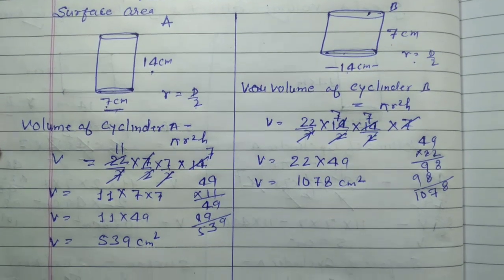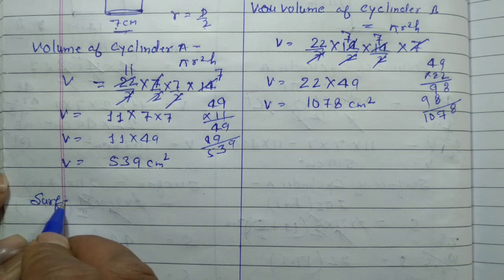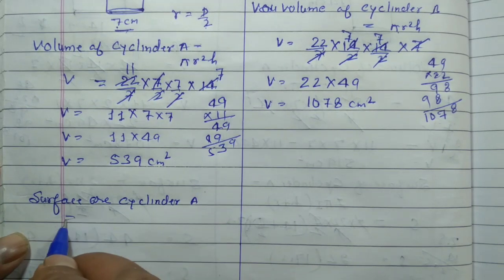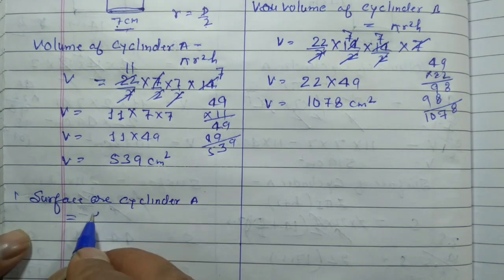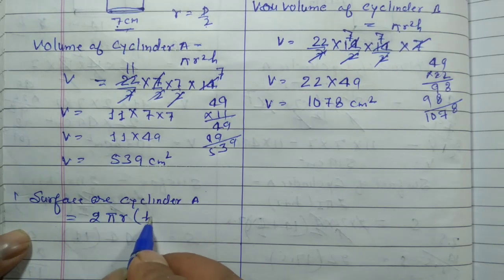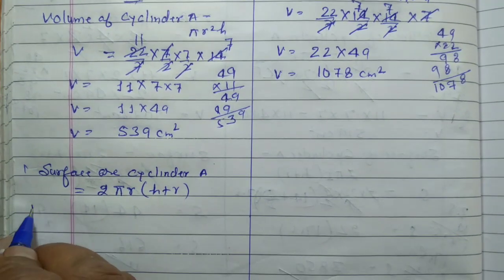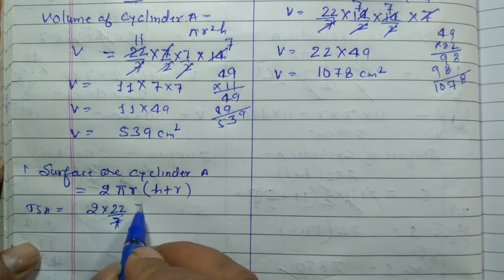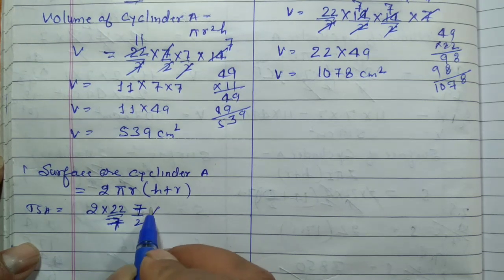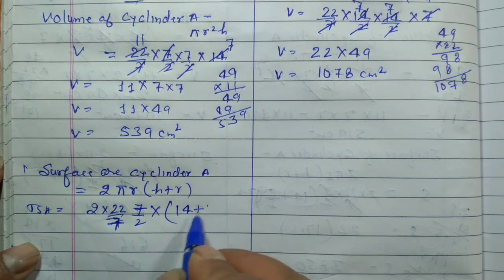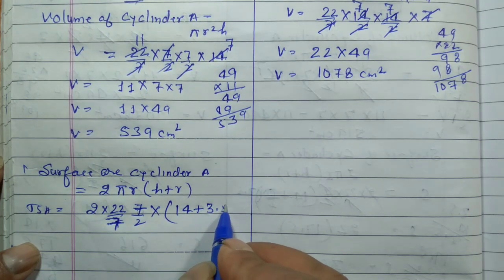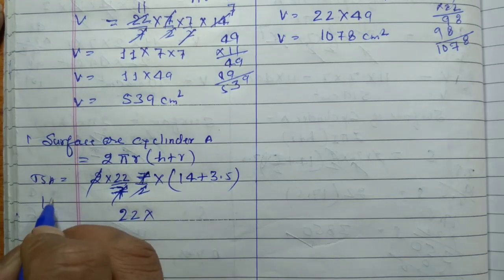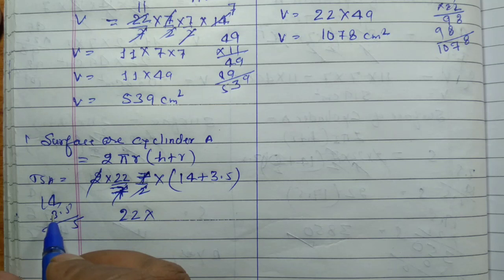अब हमें दोनों का surface area निकालना है। पहले cylinder A का total surface area निकालते हैं। TSA = 2πr(h + r). Pi = 22/7, diameter = 7 so r = 7/2 = 3.5, h = 14. So TSA = 2 × (22/7) × 3.5 × (14 + 3.5) = 2 × (22/7) × 3.5 × 17.5.